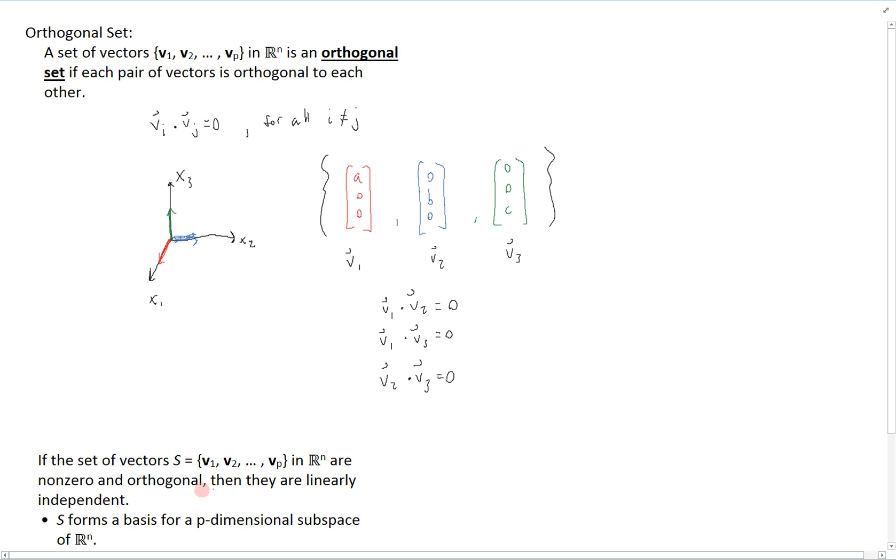Now, since they're all linearly independent, as we've shown before, this means that this set is a basis for a p-dimensional subspace of Rn. Since we have p linearly independent vectors, this forms a basis for a p-dimensional subspace.